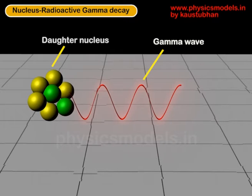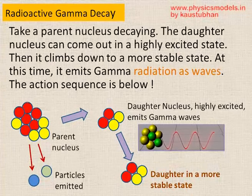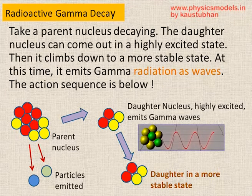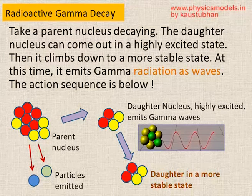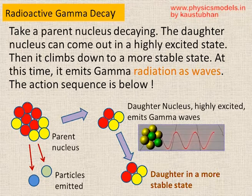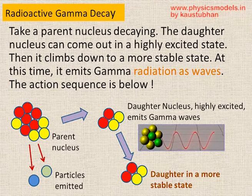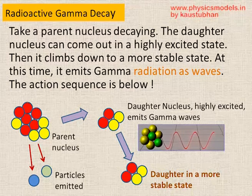So the daughter nucleus here has emitted a gamma radiation. These are very strong and extremely penetrating. To summarize, we start with the parent nucleus somewhere in history and the parent nucleus has decayed to a daughter nucleus which is in a highly excited state. Then you can see in the sketch below that the daughter nucleus comes down to a more stable state, and in that process we have the emission of gamma radiation. This is the action sequence of how to get the gamma waves starting from a parent nucleus.